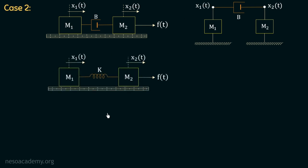Let us consider one more mechanical system with two masses M1 and M2 lying on a fixed surface, with force F applied on the right-hand side. Mass M1 undergoes displacement x1(t) and mass M2 undergoes displacement x2(t). A spring of spring constant k is attached between the two masses. Applying step one, there are two displacements x1(t) and x2(t). In step two, mass M1 has displacement x1(t), mass M2 has displacement x2(t), and the spring has net displacement x1(t) minus x2(t).